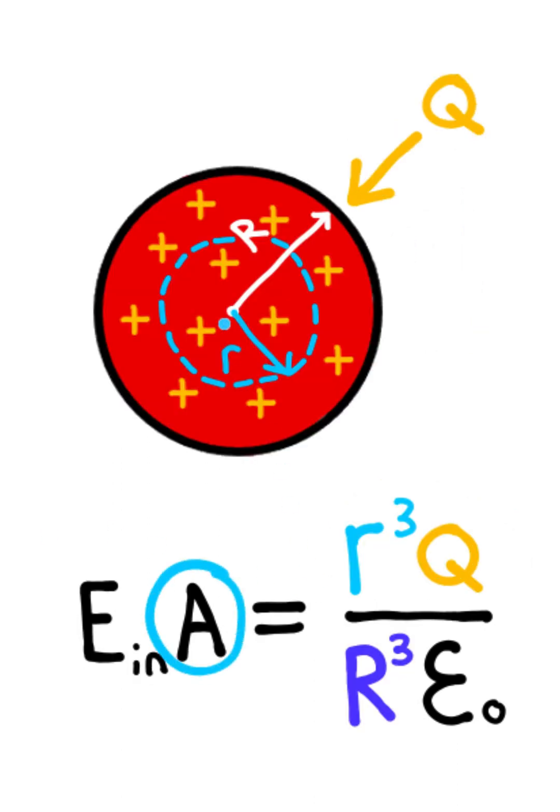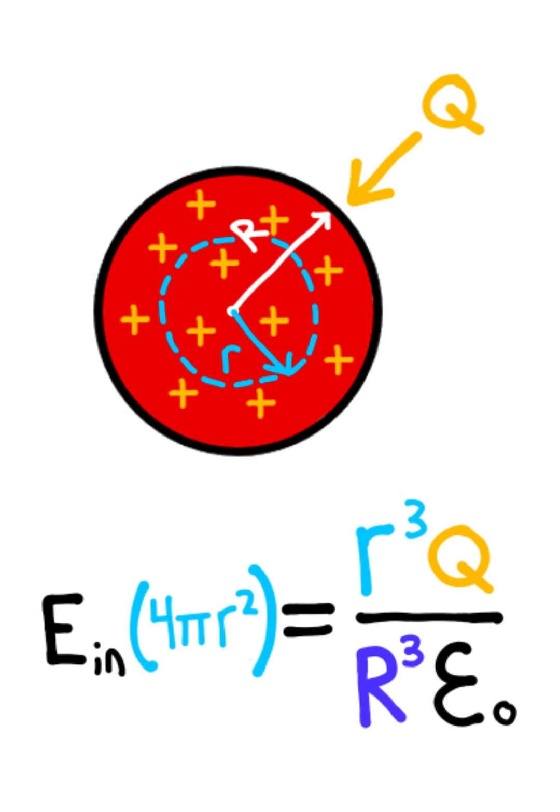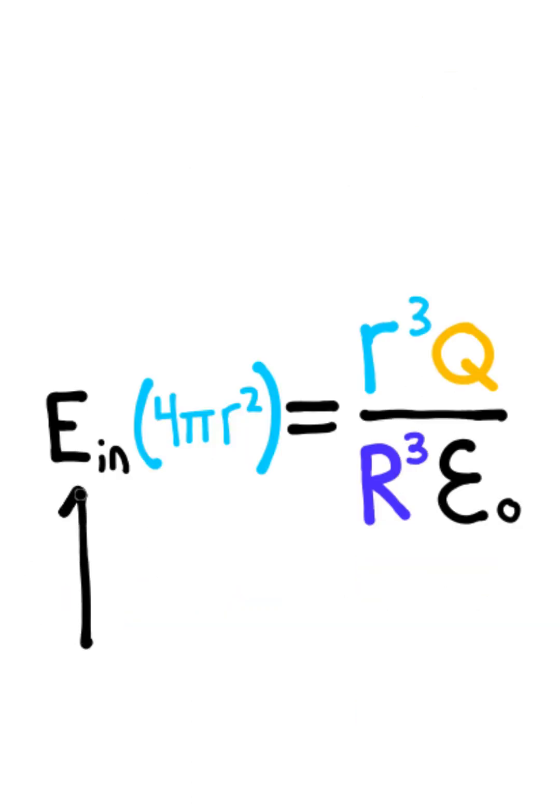Now the area that you're dealing with is the surface area of the imaginary sphere, which is just going to be 4π times the radius squared. All we need to do is solve for the electric field using algebra.